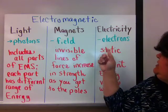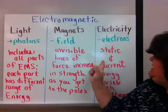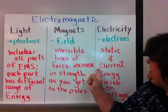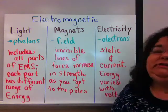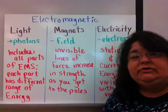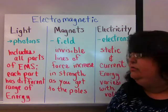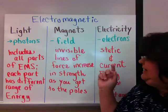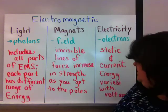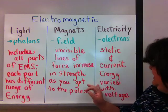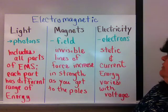Electricity travels as electrons, and we know that we have static and current electricity. Both of these involve electrons. Static electricity is when the electrons don't travel. Static means to not move. Current electricity is when the electron travels through a circuit, like in our home. The energy will vary with voltage for electricity.